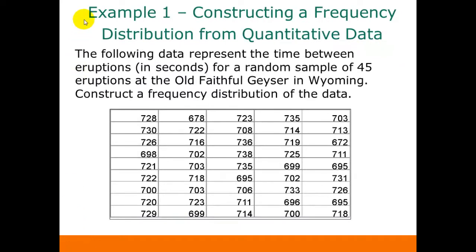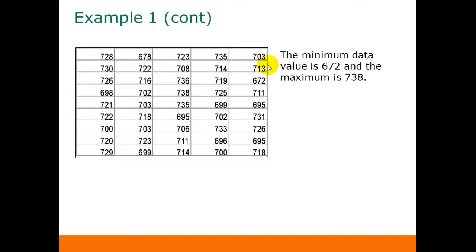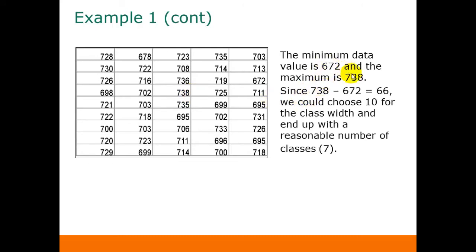Here's an example of constructing a frequency distribution. This data represents the time between eruptions for a random sample of 45 eruptions at Old Faithful. The minimum data value is 672 and the maximum data value is 738, so the difference is 66. Because the range is 66, we can choose 10 for the class width — that's an easy one to deal with. Dividing 66 by 10 gives us 6.6, and rounding up gives us 7 classes, which is a reasonable number.